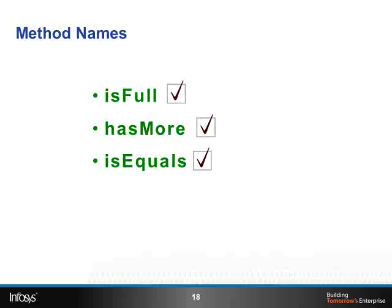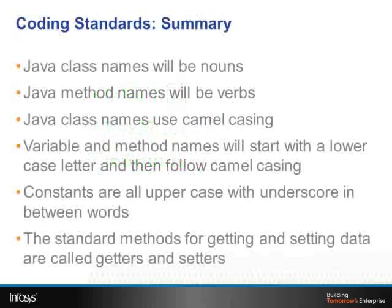Let us summarize. Java class names will be nouns. Java method names will be verbs. Java class names use camel casing. Variable and method names will start with a lowercase letter and then follow camel casing. Constants are all uppercase with underscore in between words. The standard methods for getting and setting data are called getters and setters.